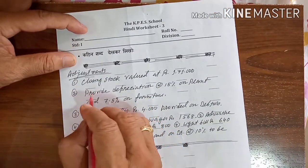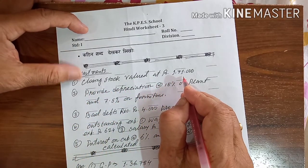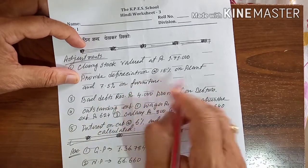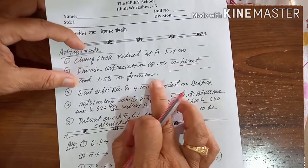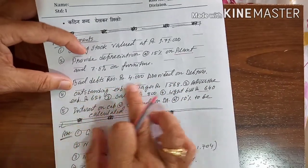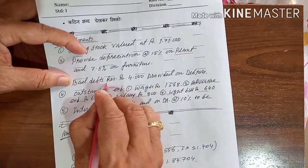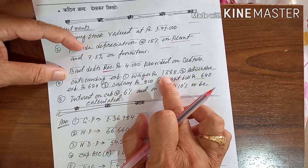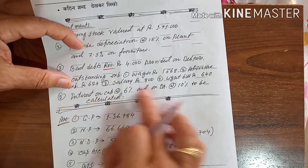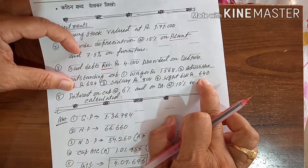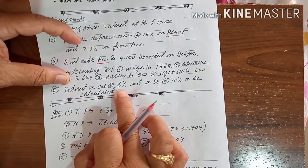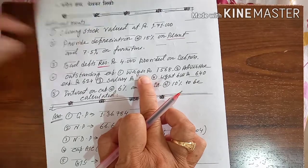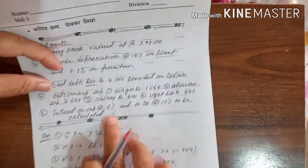The adjustments for question 2 are as follows. First: closing stock valued at Rs 1,71,000. Second: provide depreciation at the rate of 15% on plant and 7.5% on furniture — keep in mind the additional plant was purchased in the middle of the year. Third: bad debt of Rs 4,000 to be provided on debtors as bad debt reserve. Fourth: outstanding expenses — wages Rs 1,568; advertisement expense Rs 624; salary Rs 800; light bill Rs 640 — add these to the respective expense and liability. Fifth: calculate interest on capital at 6% and interest on drawings at 2%.